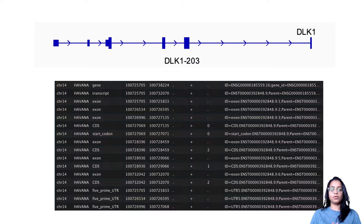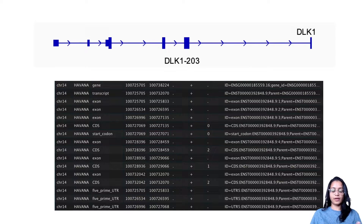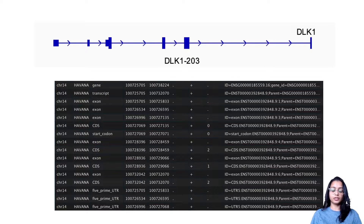The last column is the attributes column, which holds more information about the annotation of that feature. The information is in the form of tag-value pairs, and multiple tag-value pairs are separated by semicolons. We'll look at this in further detail in the next section.